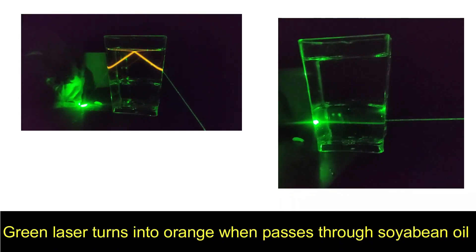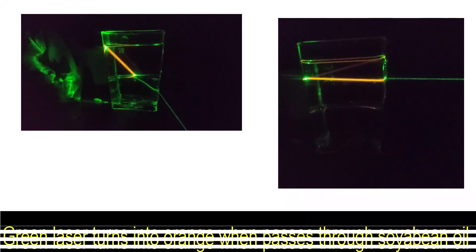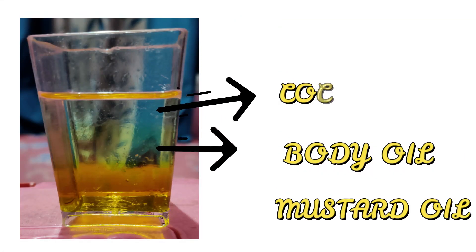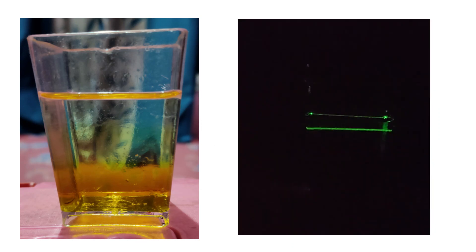But will it happen for all types of oils? Let's find out. So to investigate further I took three kinds of oil: one coconut oil, two regular body oil, and three mustard oil. But what I found here was that green laser light is turning into orange only when it is passing through the mustard oil, not body oil or not even coconut oil.